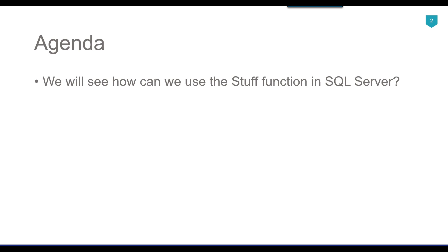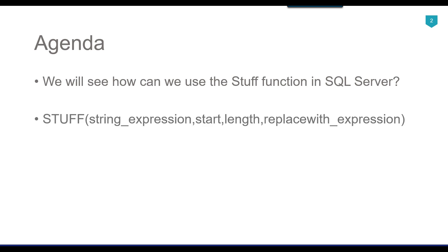In SQL Server, the STUFF function is used to replace a specified portion of a string with another substring. The syntax of the STUFF function is: first you provide the string expression (the string in which you want to replace something — this can also be a column), then you provide the starting position (from which position you want to start replacing), then you provide the length (how many characters you want to remove). If you put 0 for length, it will append the other string instead of replacing. Finally, you provide the replacement expression.